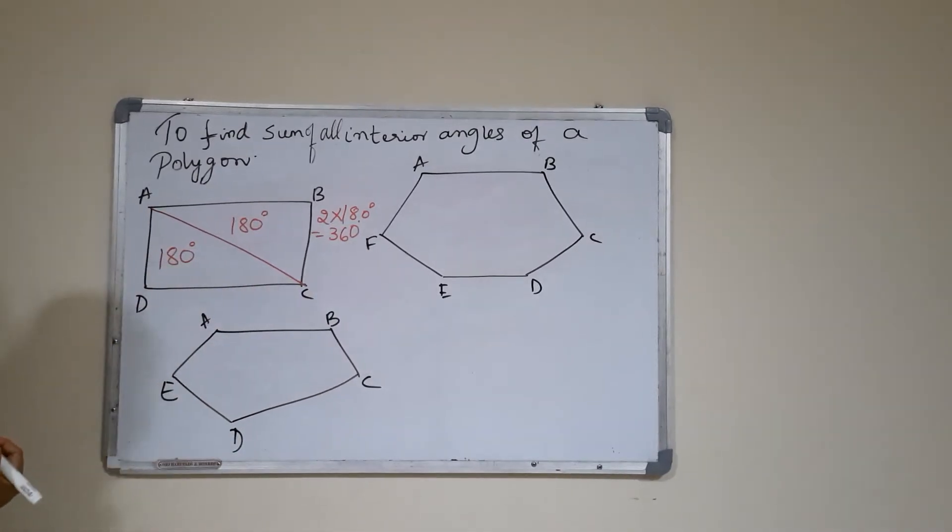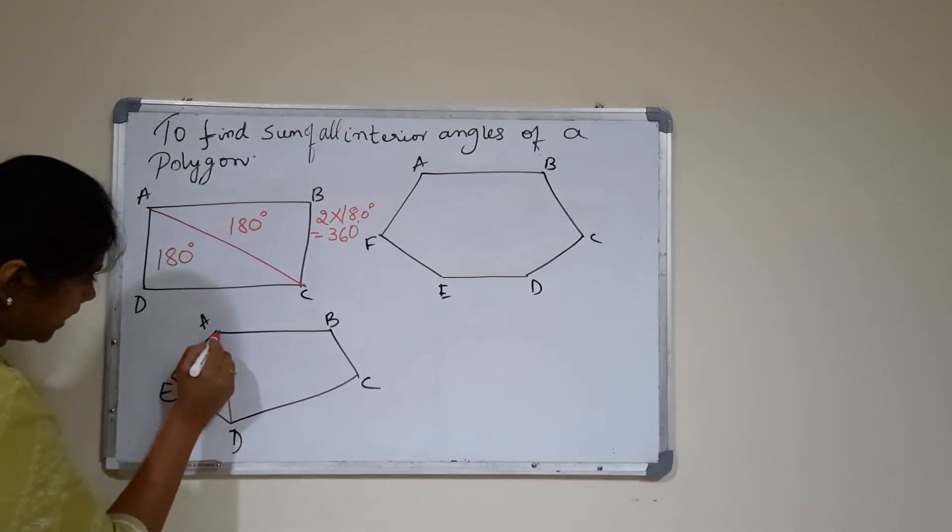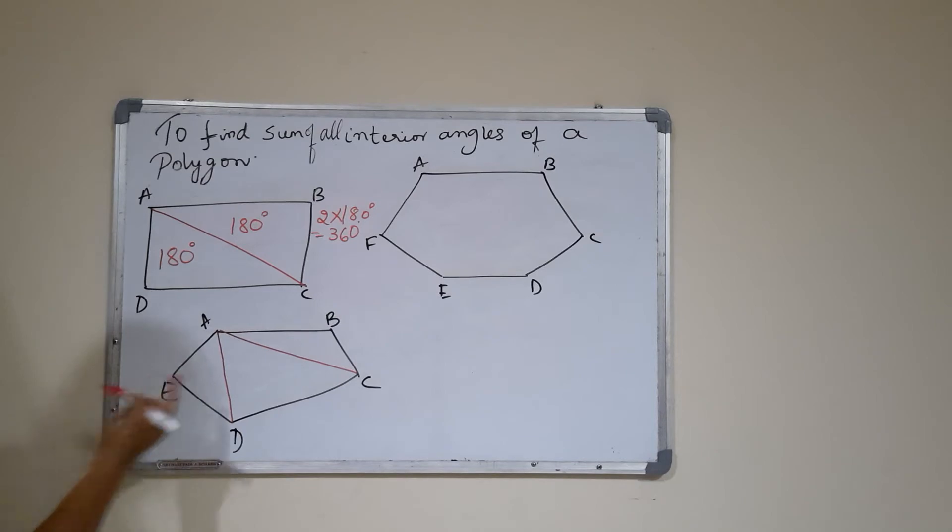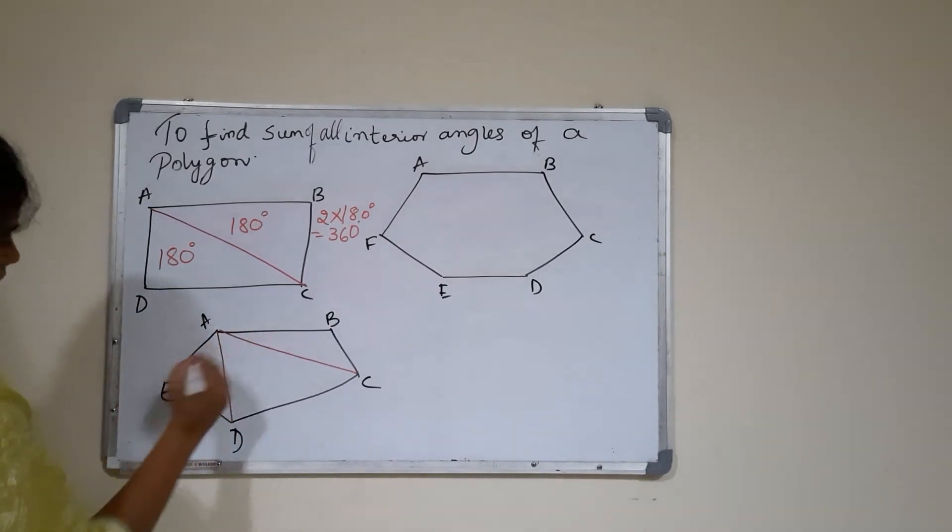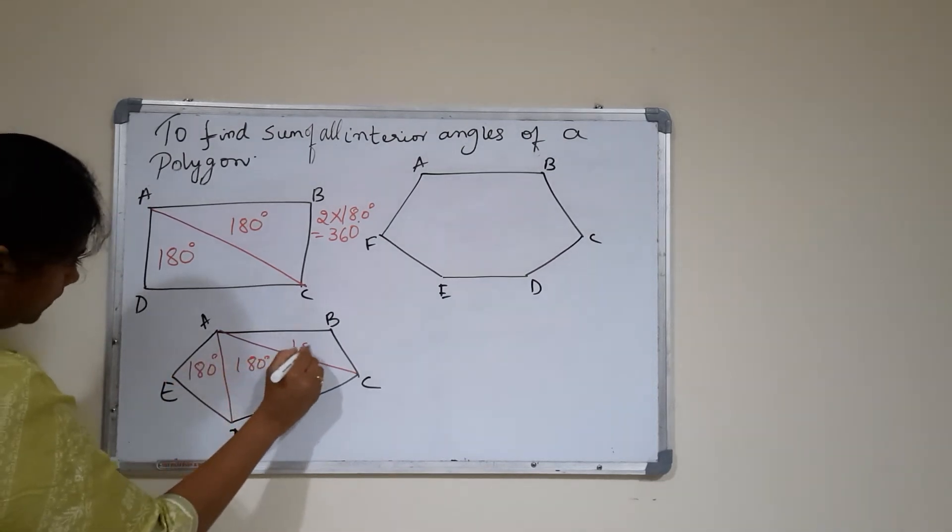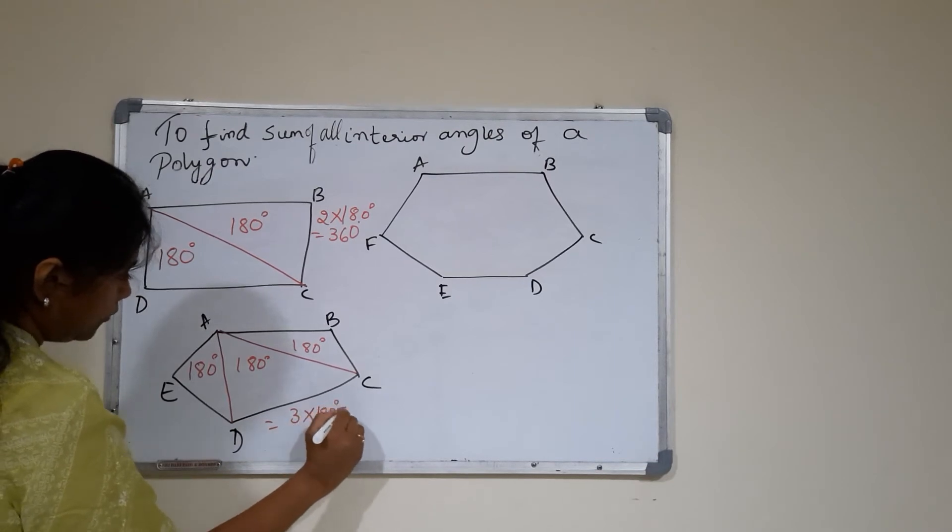Just like that, we will do it for a pentagon as well. With respect to one vertex, I am drawing as many diagonals as I could. So I have drawn two diagonals, and I got three triangles. That is 180, 180, 180, so that is 3 into 180, which equals 540 degrees.